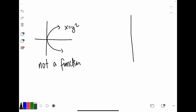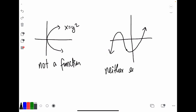There could be functions that don't have any symmetry at all. Such a function doesn't have y-axis symmetry nor origin symmetry. In that case, you would say that this function is neither even nor odd.